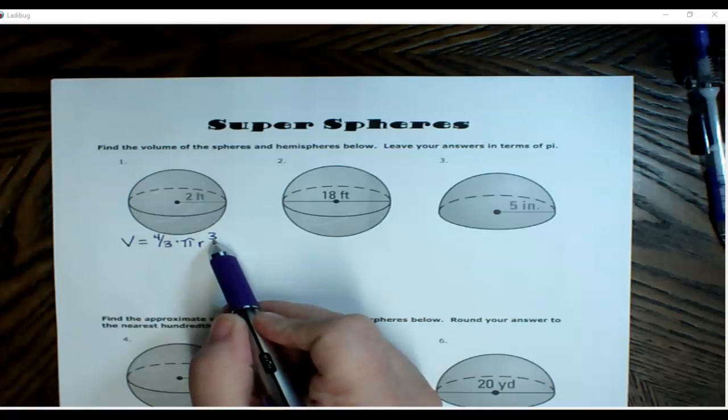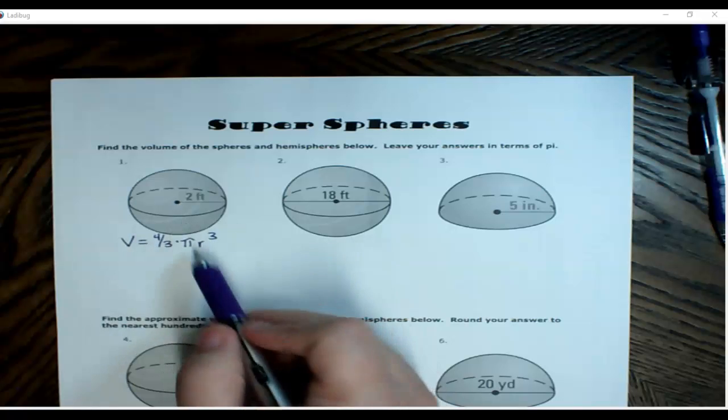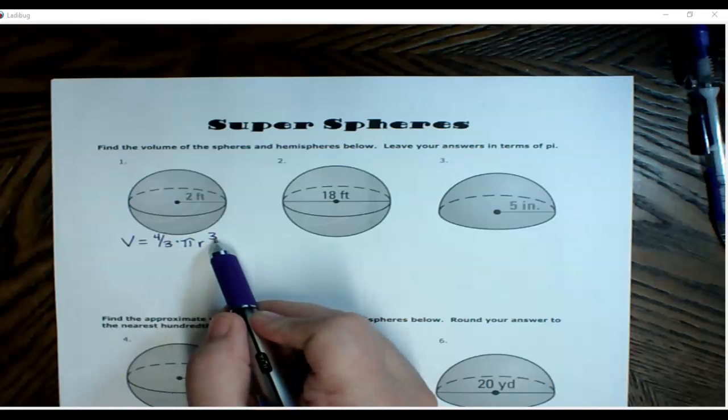Okay, so be careful, because you're so used in the habit of doing pi r squared, but now for spheres, it's three-dimensional circle, so it's pi r cubed.